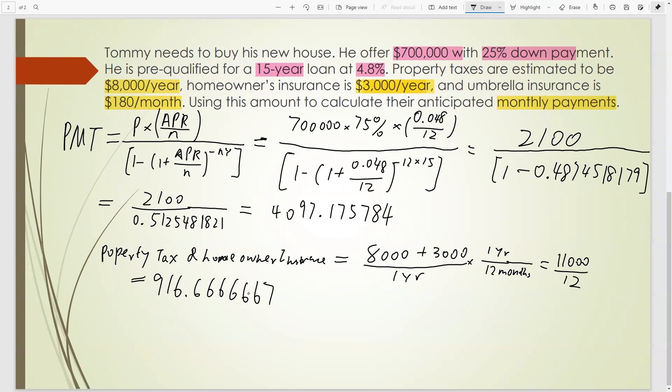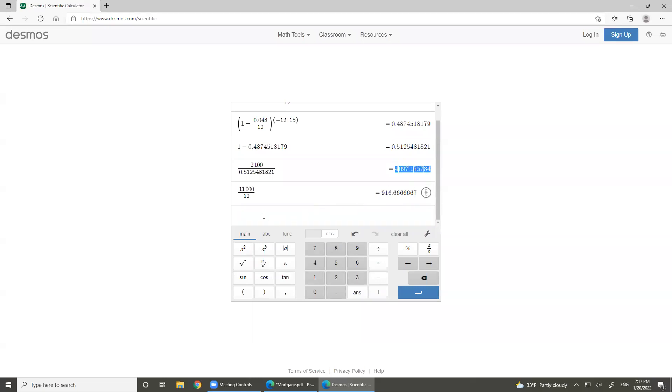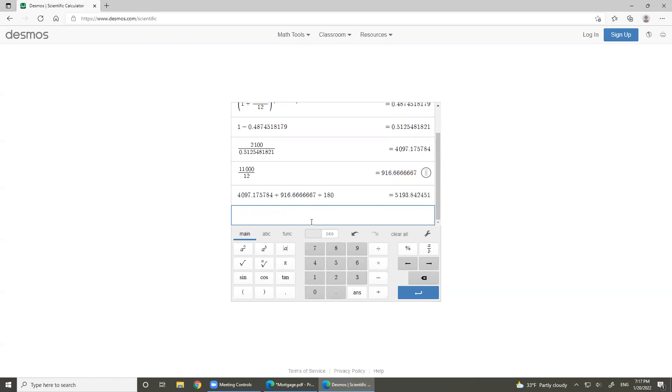And the umbrella insurance is clearly that's $180 per month. So total monthly payment, that's $4,017,175,784 and property tax, insurance together. That's 916 per month. And umbrella insurance, we find this $180 per month. And we add these three together. That's the mortgage payment plus the home loan insurance plus property tax plus $180 for our umbrella insurance. Together we get $5,193.